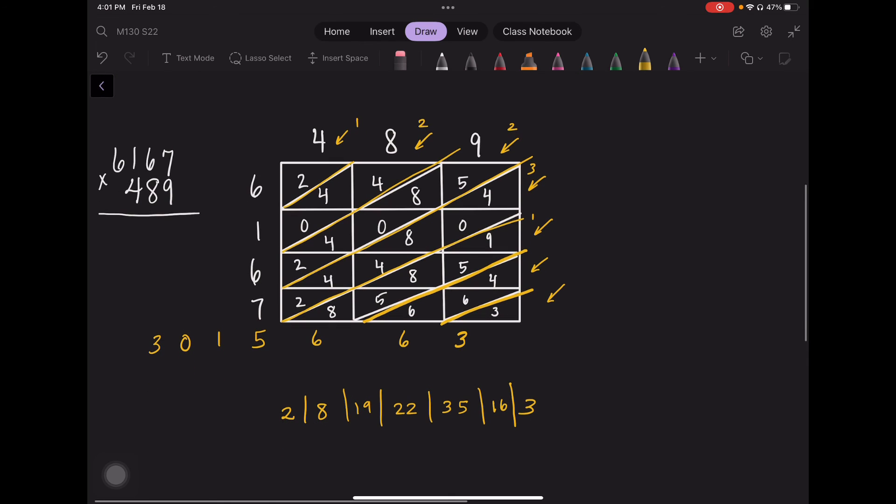Now notice that the number that I have here is 3,015,663. That doesn't match what I was writing at the bottom. If I was to carry over like I had, this is 16. I dropped the 6. Carry the 1. That makes it 36. Carry the 3. That makes it 25. Carry the 2. That makes that 21.